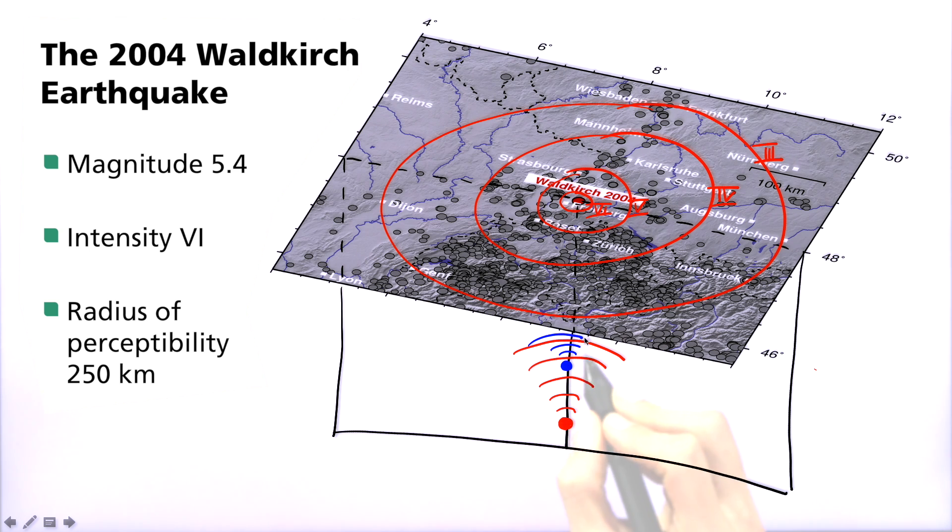Hence, if the Waldkirch quake had taken place at a shallower depth, the damage and thus the maximum intensity would have been greater. The radius of perceptibility, on the other hand, would have been smaller.